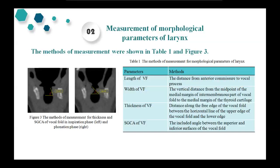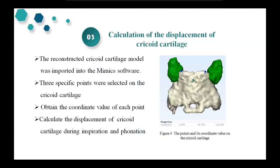The subglottal convergence angle is the included angle between the superior and inferior surfaces of the vocal fold. The next step is the calculation of the displacement of the arytenoid cartilage. Three specific points were selected on the arytenoid cartilage as shown in Figure 4. The coordinate values of each point were obtained to calculate the displacement of the arytenoid cartilage during inspiration and phonation.